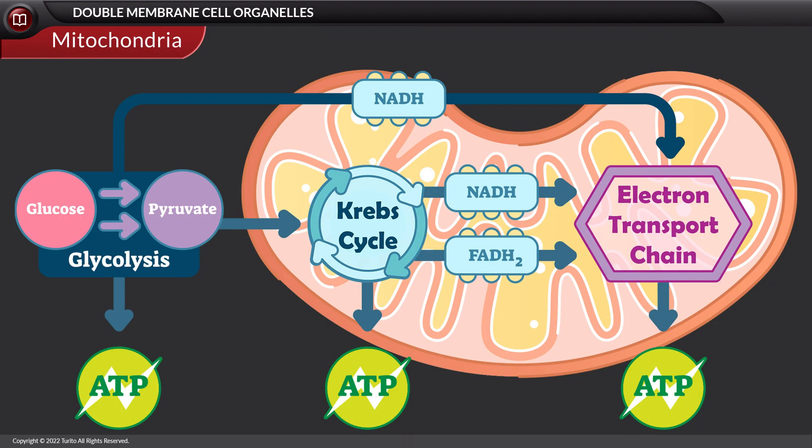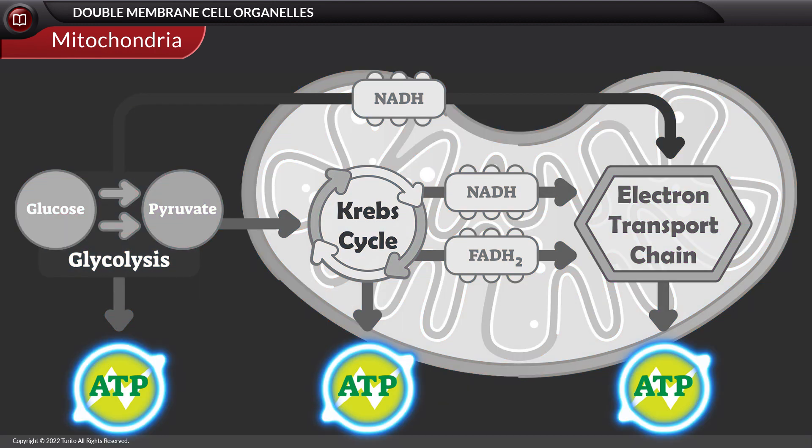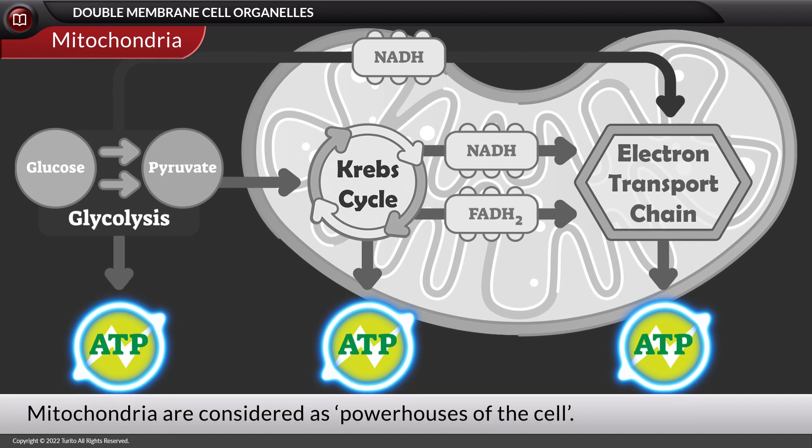Functionally, mitochondria play a critical role in aerobic respiration for the generation of metabolic energy in the form of ATP, adenosine triphosphate, and hence are referred to as powerhouses of the cell.